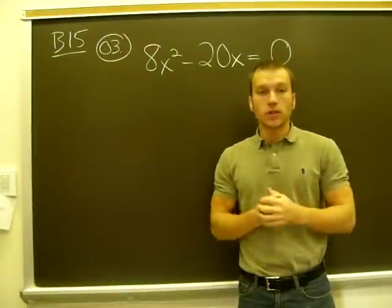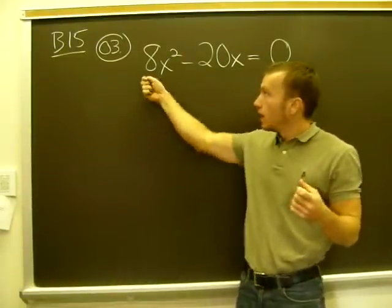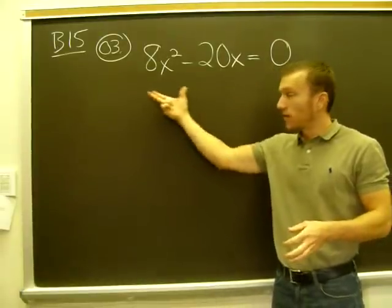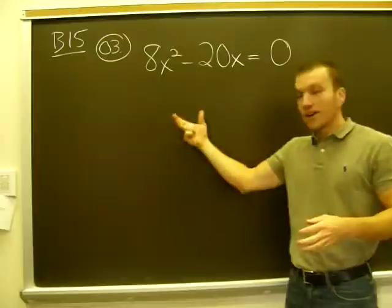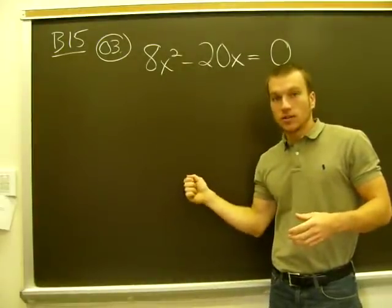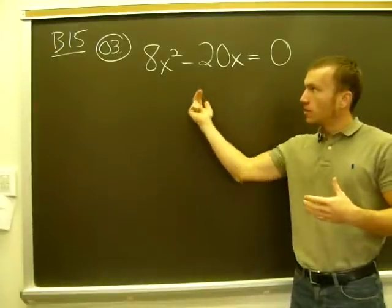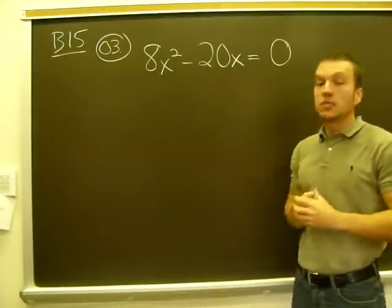First thing we always want to do with these is make sure the equation is equal to zero because we can use that zero product principle. If we factor, we'll have two factors equal to zero and we can set each to zero. So we have to make sure first that's set to zero. If not, we have to perform some algebra in order to make it equal to zero.